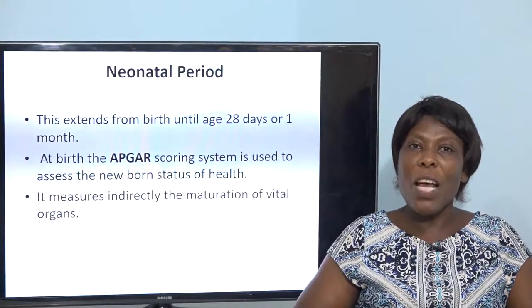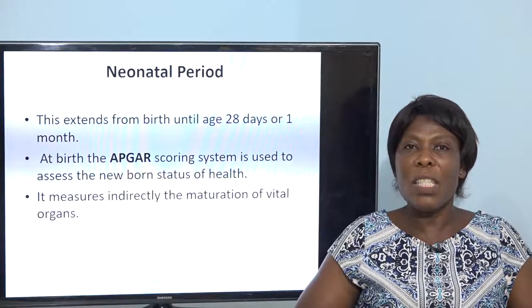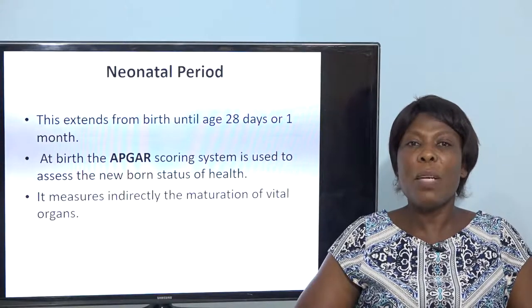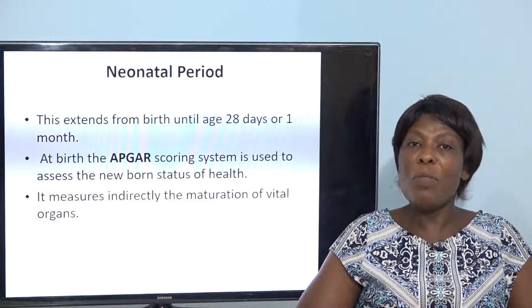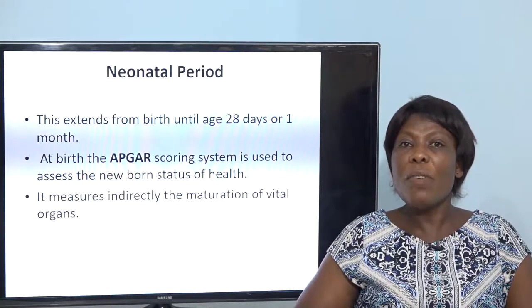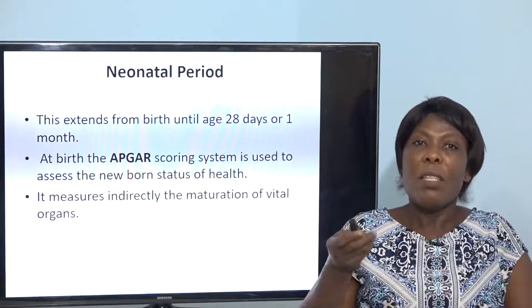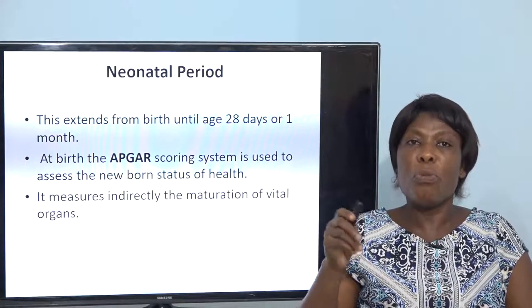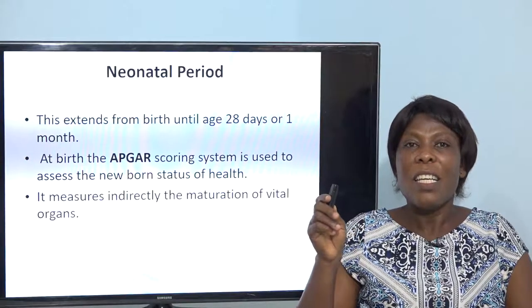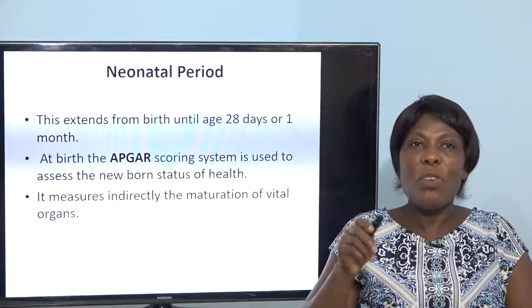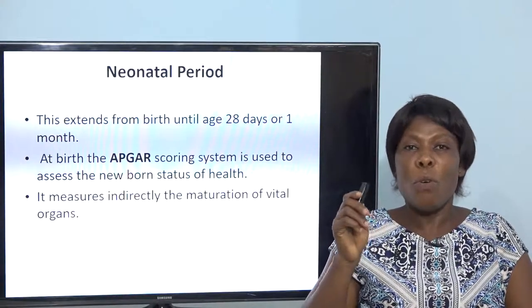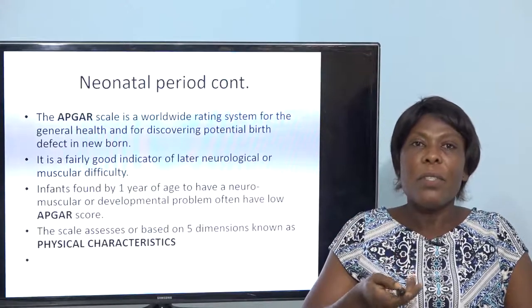The neonatal period starts from day of birth to 28 days, or the first month of the child's life. We use the APGAR score in assessing the newborn — Appearance, Pulse, Grimace, Activity, and Respiration. Each component is scored zero to two. You assess the child at the first minute and the fifth minute, and the score should range between seven and ten.